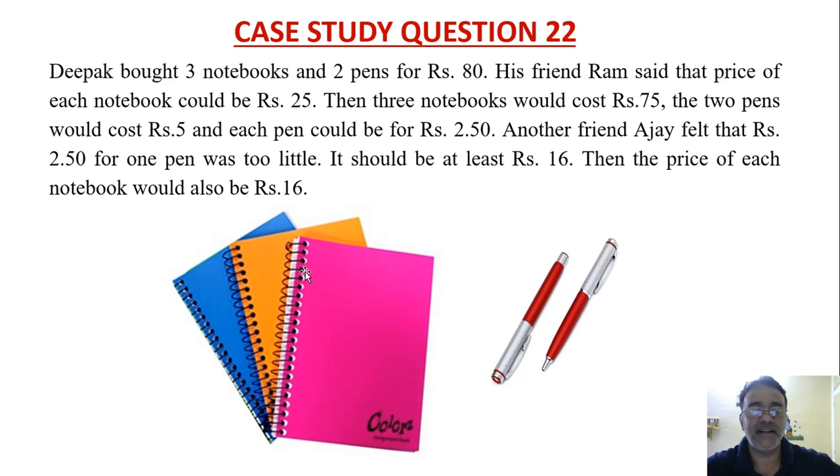Now see this very interesting context is there. Deepak bought 3 notebooks and 2 pens for Rs. 80. His friend Ram said that price of each notebook could be Rs. 25 means he is guessing. Then 3 notebooks would cost Rs. 75. Other 2 pens would cost Rs. 5. And each pen could be for Rs. 2.50. Clear? Here. This is the guessing of Ram.